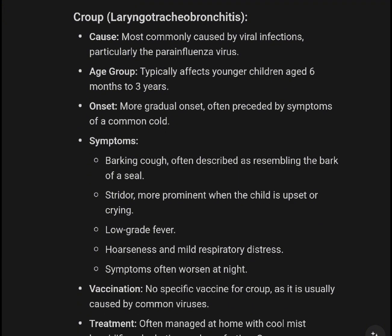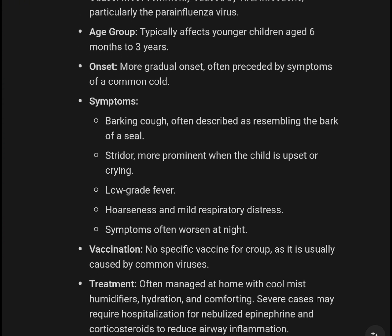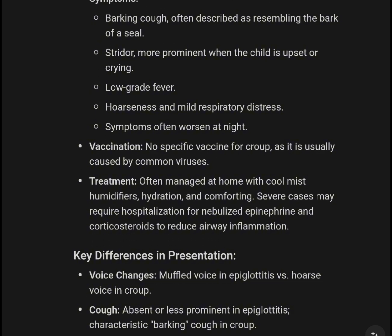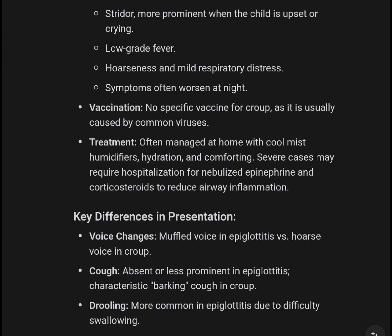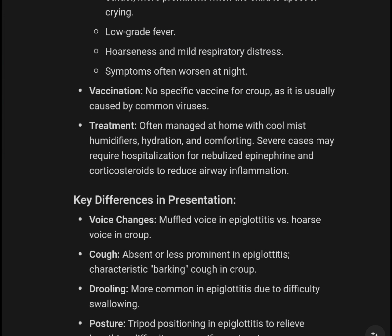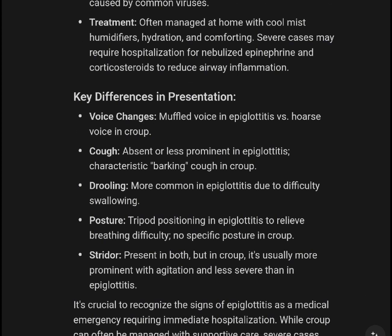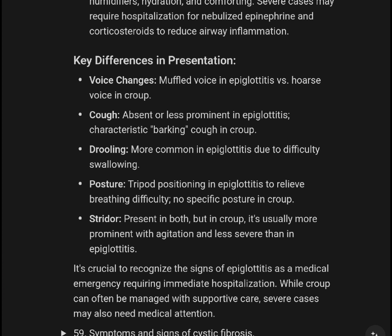Croup, or laryngotracheobronchitis, is most commonly caused by viral infection, particularly the parainfluenza virus. It typically affects younger children aged 6 months to 3 years. Onset is more gradual, often preceded by URI symptoms. Classic symptoms include a barking cough often described as resembling the bark of a seal, stridor worse when the child is upset or crying, low-grade fever, hoarseness, and mild respiratory distress. Symptoms often worsen at night. There is no specific vaccine for Croup as it is caused by common viruses. Treatment is often managed at home with cool mist, humidifiers, and hydration.